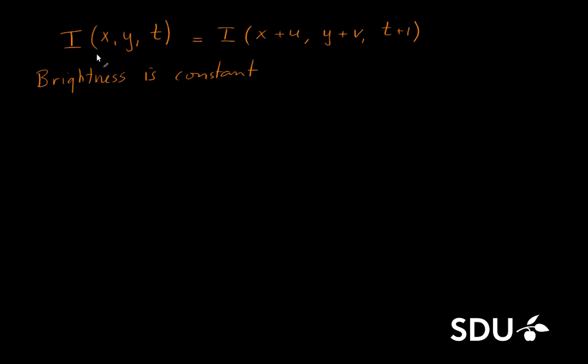And this is what comes from this constant brightness assumption. I will try to rewrite this, so it will be a bit easier to work with. And to make this rewrite, we rely on that we only have small movements, which means that we can replace small movements. That means that u and v are small.